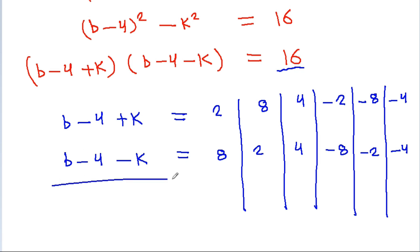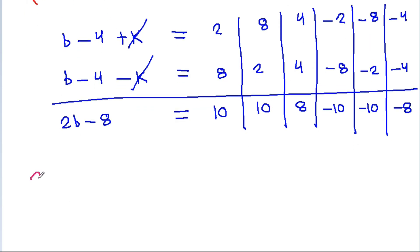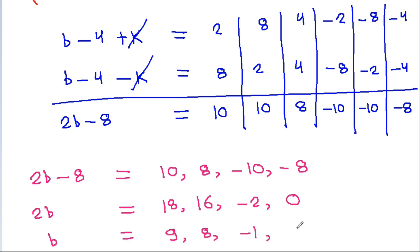Adding both factor values gives 2(b minus 4), which equals 10, 8, minus 10, and minus 8 respectively. So 2b equals 18, 16, minus 2, and 0, giving b equals 9, 8, minus 1, and 0.